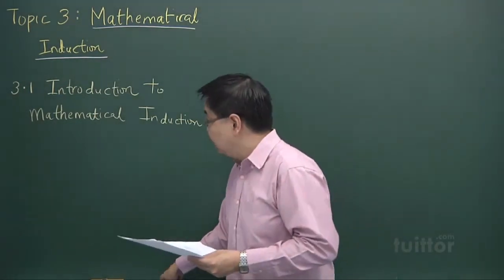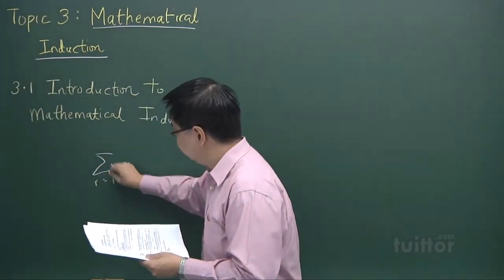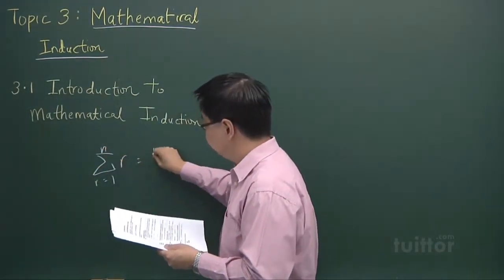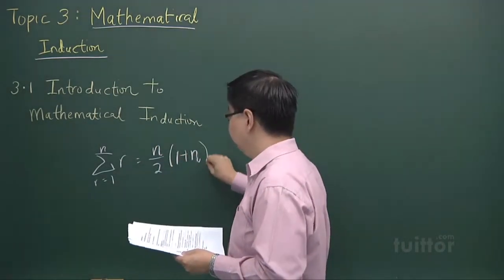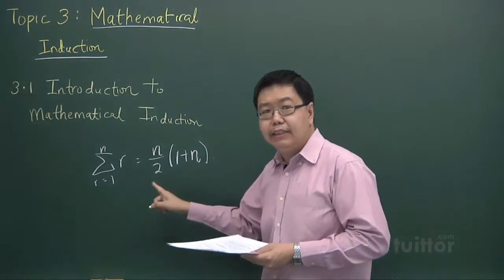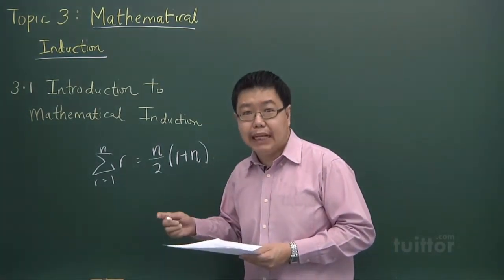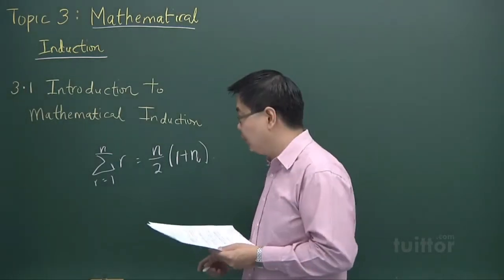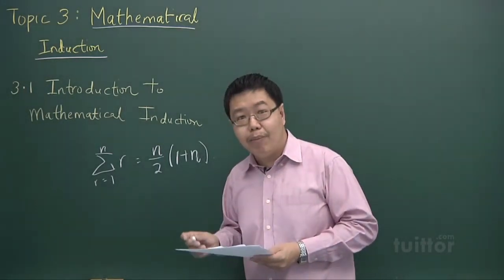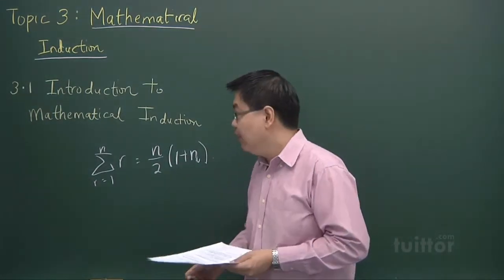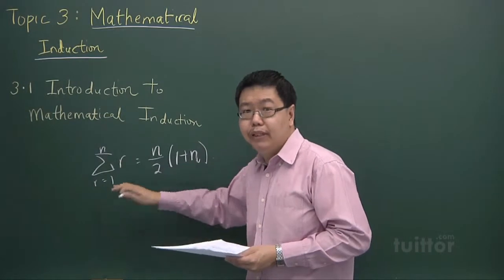So for example, we would like to show this result. You probably have seen this result before — this is the very famous sum of the first n terms of an arithmetic progression with first term one and common difference one. We are going to use the method of mathematical induction to prove this statement.